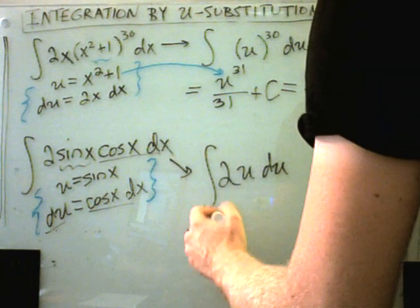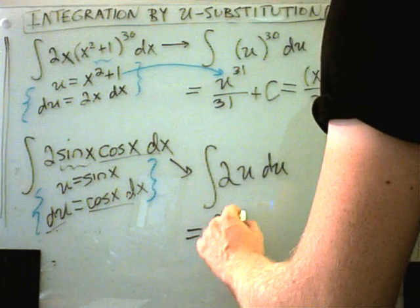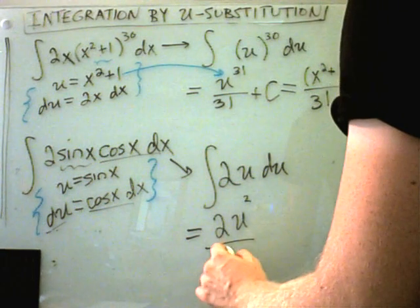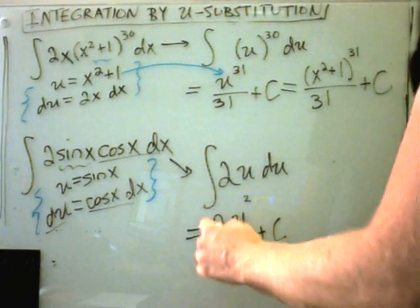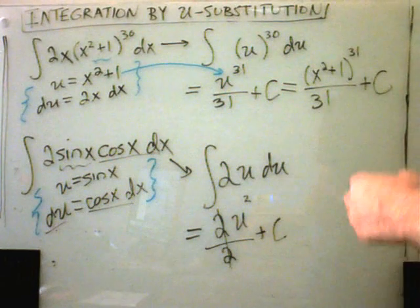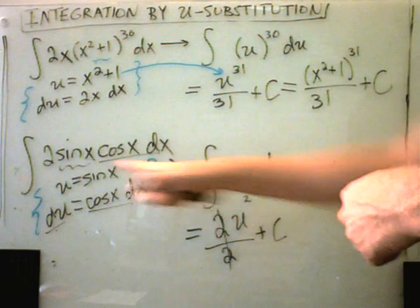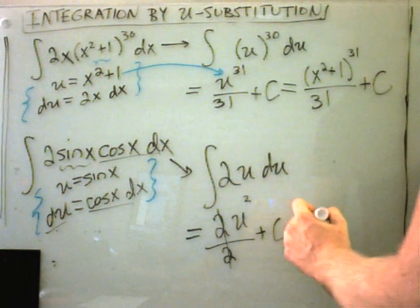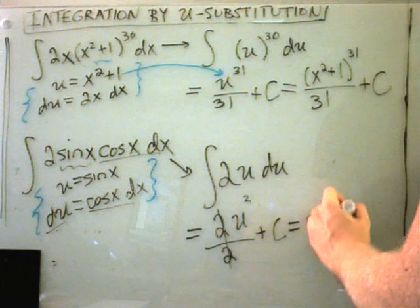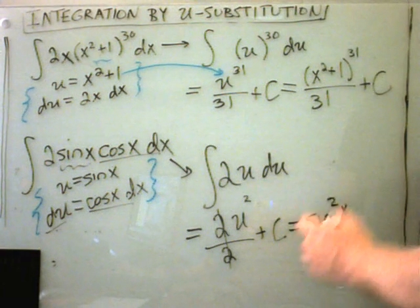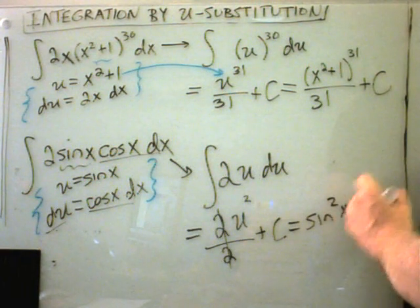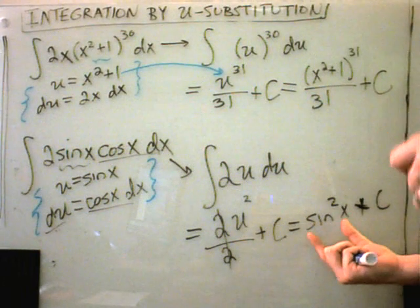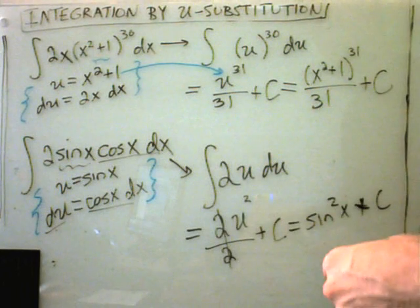All you have to do, the constant comes along for the ride, u, you add 1 to the power, you divide by that new power, plus c. So certainly here, the 2s would cancel out. And again, all I have to do is replace u with what it was in my substitution. u was equivalent to sine of x, so I will get sine squared of x. Remember, that's equivalent notation to sine of x, quantity squared, plus c. And again, you can check by taking the derivative of this, you'll have to use the chain rule, that you will in fact get 2sine x, cosine x.